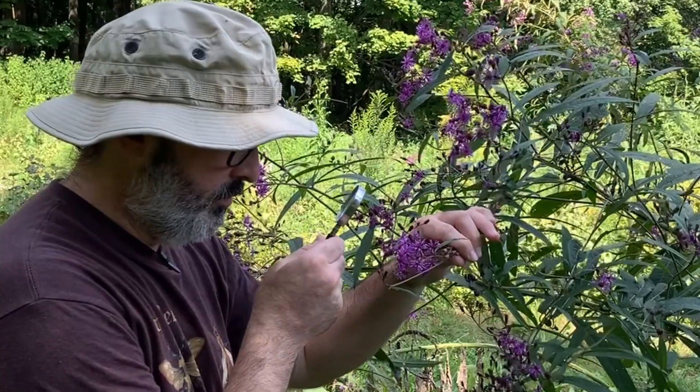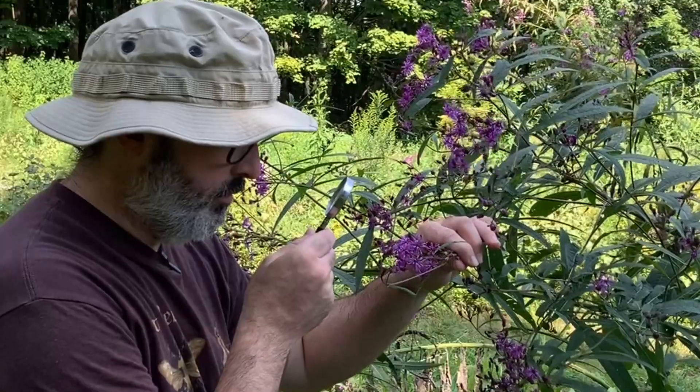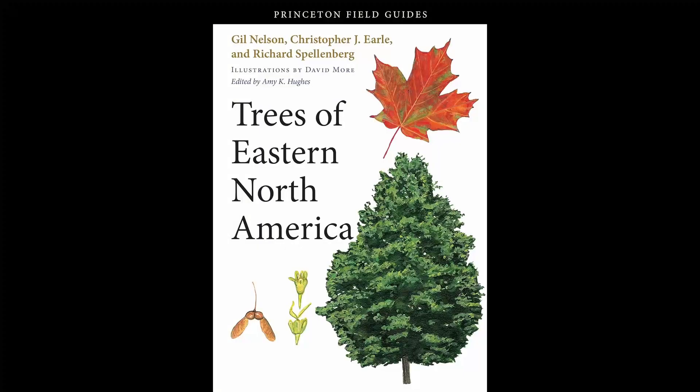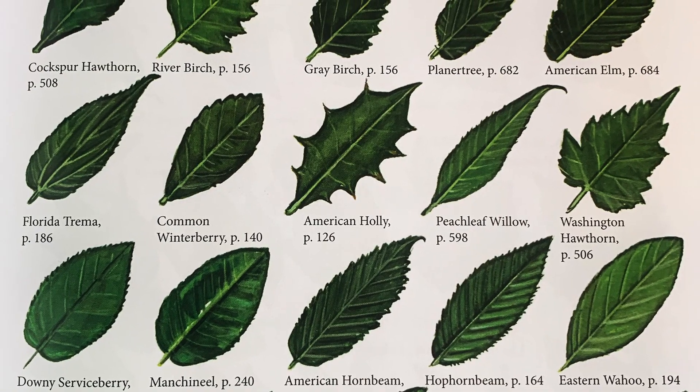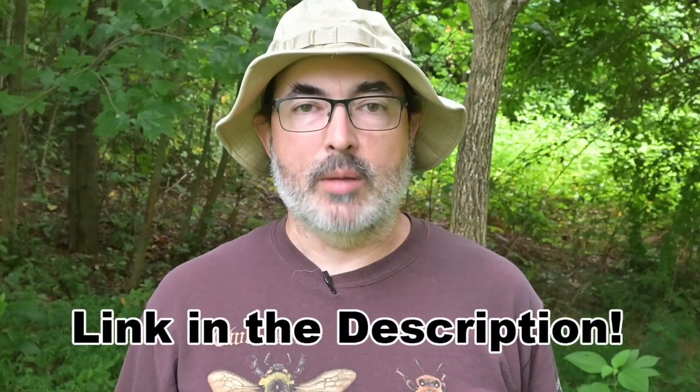If you can identify a pinnately compound leaf, you should be able to figure out bi and tripinnately compound leaves with a little experience. If you are out in your neighborhood looking at plants and need a refresher on all this, most plant and tree field guides will have a set of diagrams showing the types of leaves. Need a good plant, shrub, or tree field guide? You can see all of our favorite field guides, other books, and equipment that we use here at Backyard Ecology on our recommendations page. I will put a link to it in the description.